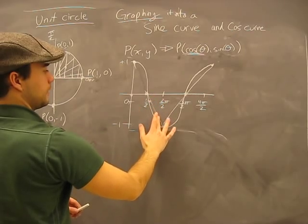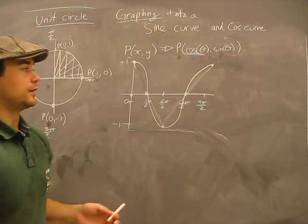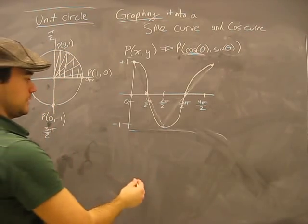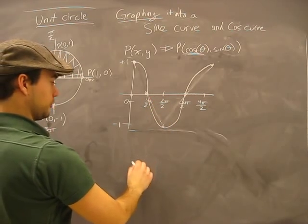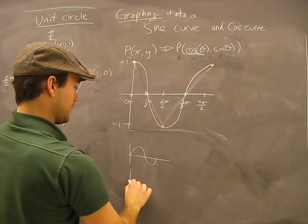It would look like this. It would smooth it out because we'd be using infinite values, so it would be more precise. You might notice that this looks awfully similar to a sine graph.